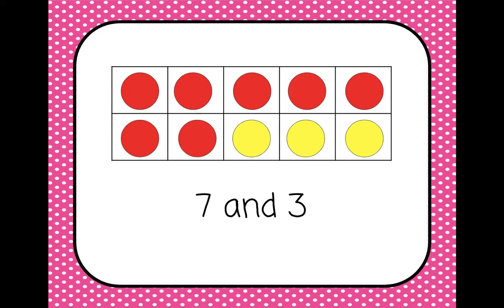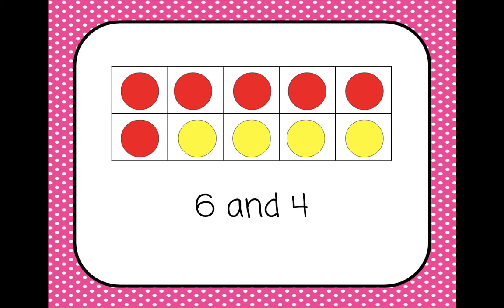Now you might be noticing a pattern. Predict what's going to happen next. Did you predict that one of the reds would change to yellow? If you did, great job — you're noticing the pattern! So now we have six red and four yellow, so six and four are friendly numbers. Now we have five red and five yellow, and five and five are friendly numbers.